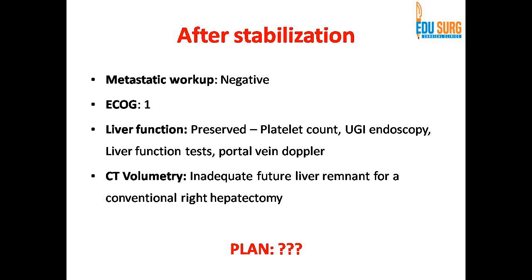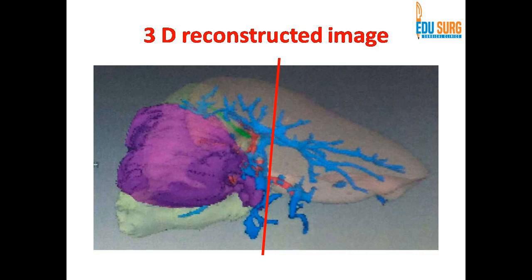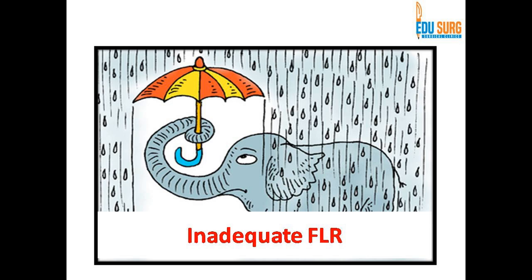The other thing required for liver resections is volumetry. However, when we did the volumetry, owing to the large size of the tumor, the future liver remnant volume was inadequate for a conventional right hemi-hepatectomy. This is the 3D reconstructed image of the patient — if we did a conventional right hemi-hepatectomy, the future liver remnant was inadequate.